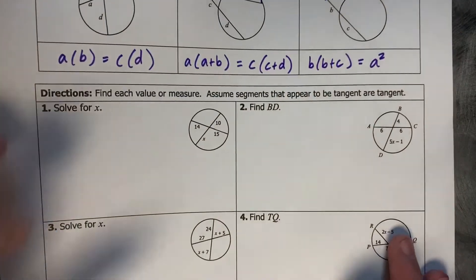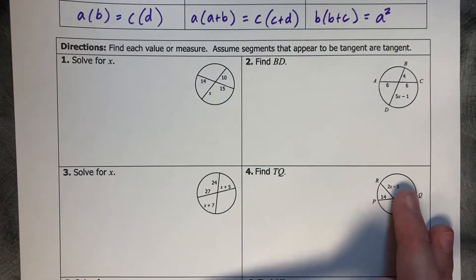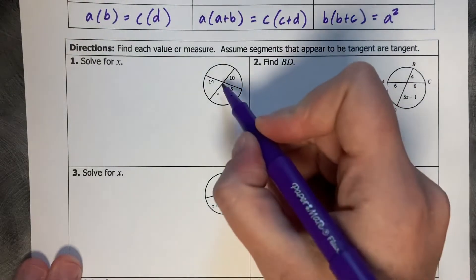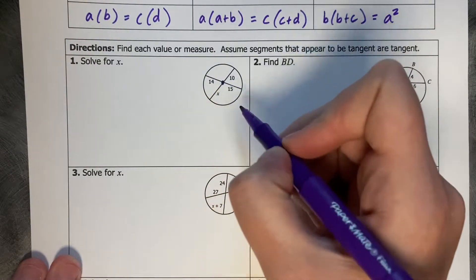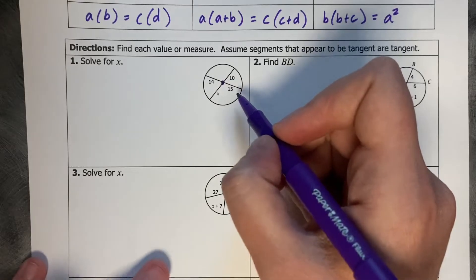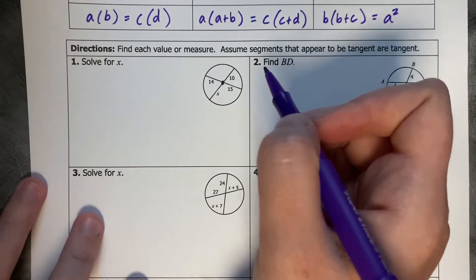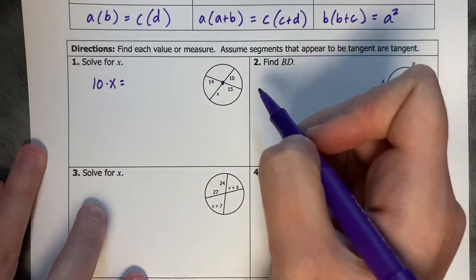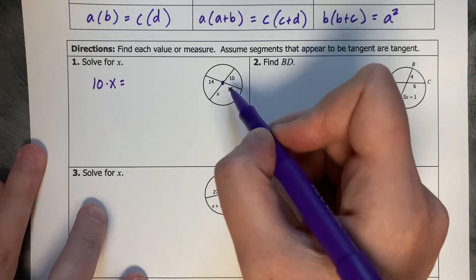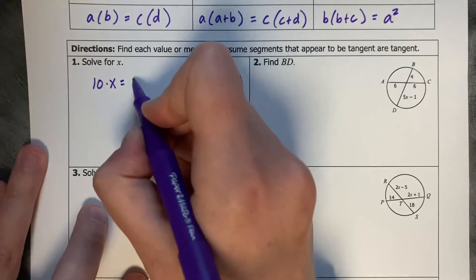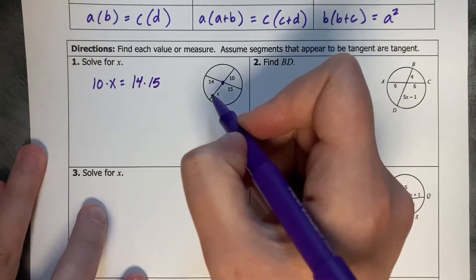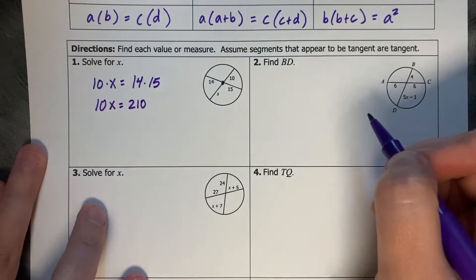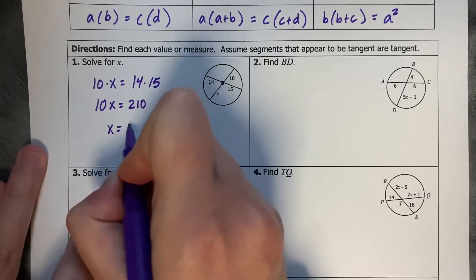So let's try this. Find each value or measure. Assume that segments that appear to be tangent are tangent. Solve for X. The intersection is interior, so we multiply each piece together: 10 times X equals 14 times 15. So this gives us 10X equals 210. Divide by 10, and X equals 21.